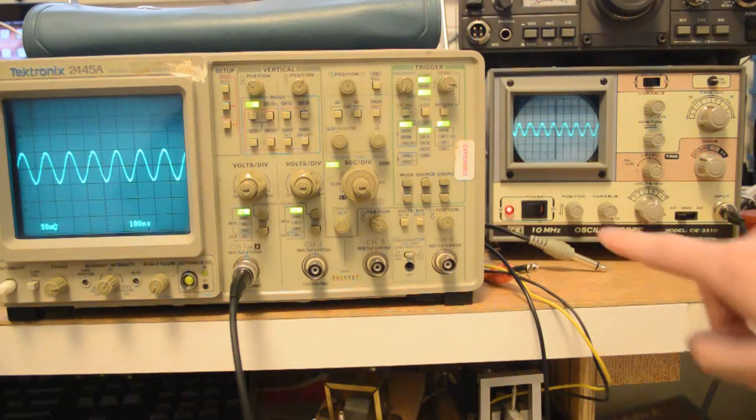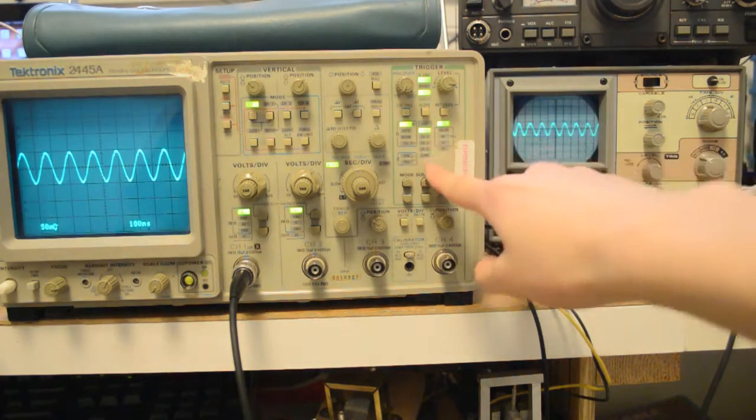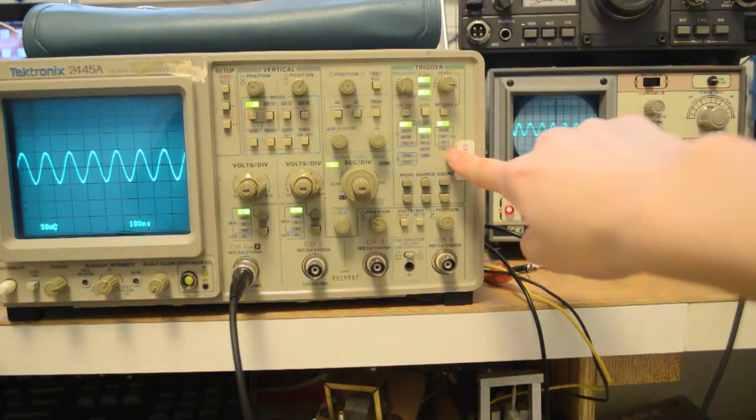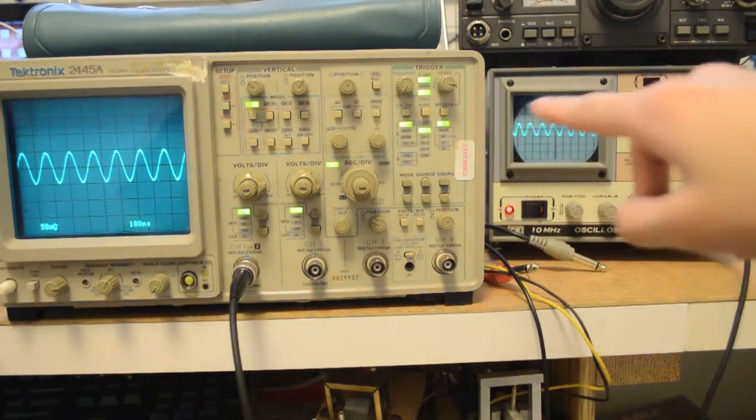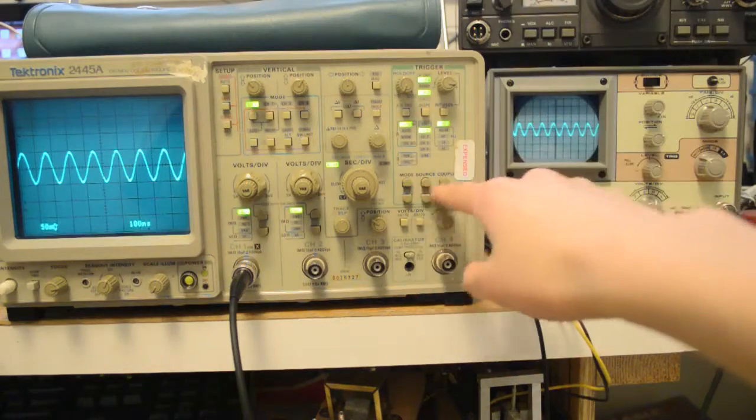Also, we have a whole ton of extra triggering options on this one. We can trigger on each channel, and we've got a couple of modes. So AC, noise reject, HF reject, whatever. Bunch of stuff. Different things going on. Mode source coupling.